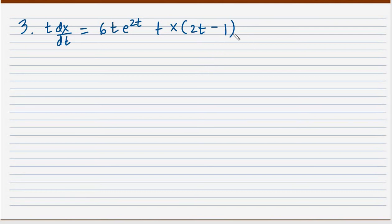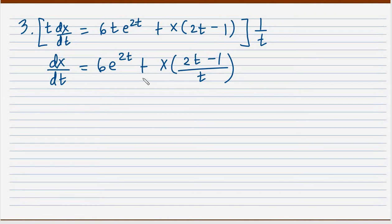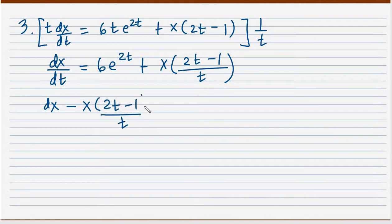What we'll do first is multiply 1 over t. So we'll have dx/dt equal to 6e^(2t) plus x times (2t minus 1) all over t. Then let's transpose this term to the other side and put it into differential form. So we now have dx minus x times (2t minus 1)/t is equal to 6e^(2t) dt.